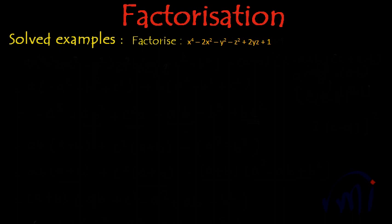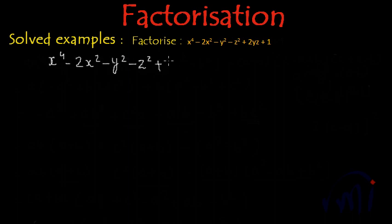Here we have one more expression which we need to factorize. The expression is x to the power 4 minus 2x squared minus y squared minus z squared plus 2yz plus 1. This expression has 6 terms and 3 variables, so it's going to be a little tricky. Let's first note down the expression, then we'll see how to solve it.